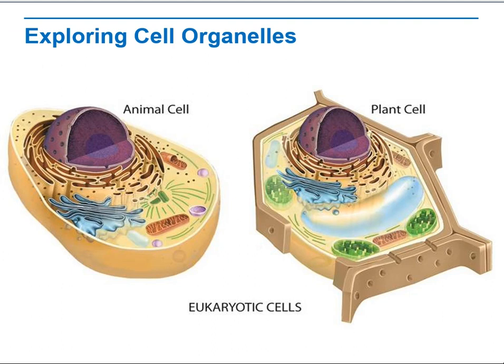We have exploring cell organelles. In eukaryotic cells, we have animal cells and plant cells. If you can see right here, they are technically the same with slightly different organelles, to function differently for each to be able to adapt to its original functions.